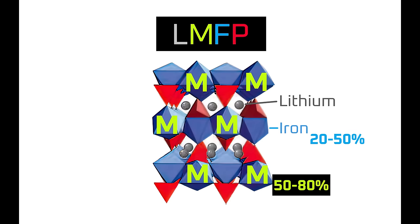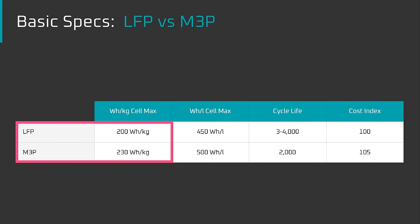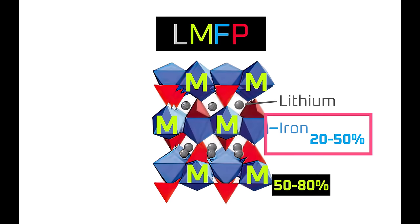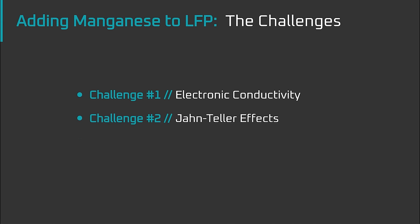By leaving some iron in the crystal structure — around 20–50% — rather than completely replacing it with manganese, it minimizes the electrical conductivity challenges of using manganese while still providing most of its increased voltage and energy density benefits. Besides improving electrical conductivity, leaving some iron in the cathode also helps with Jahn-Teller effects and dissolution issues. Let's get into those now, starting with the basics of how a cathode works.